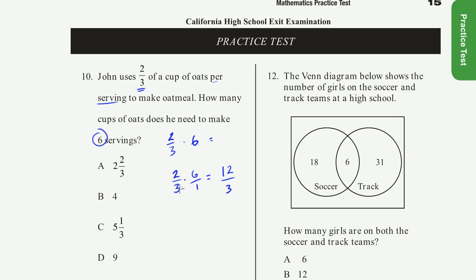2 times 6 is 12. 3 times 1 is 3. And 12 over 3, that's the same thing as 12 divided by 3. And that just equals 4, which is choice B right there.